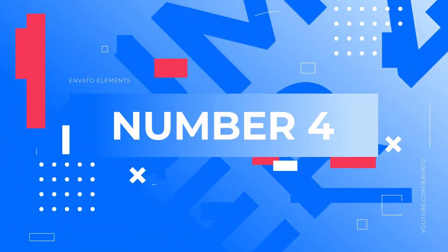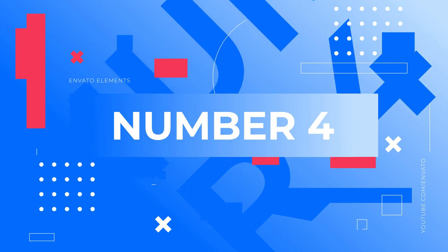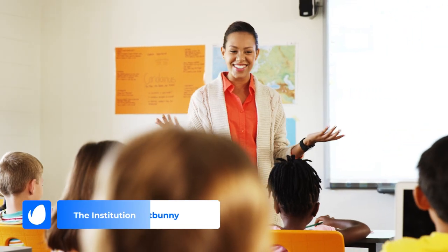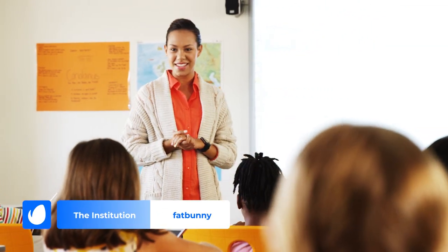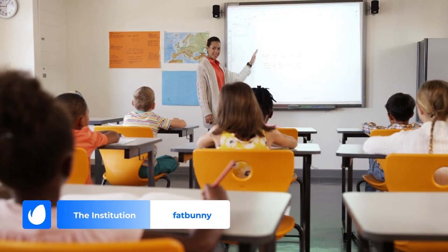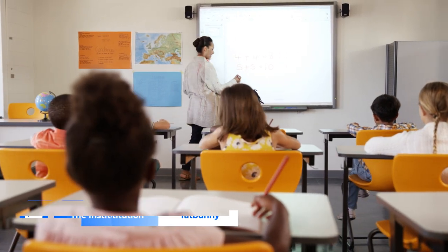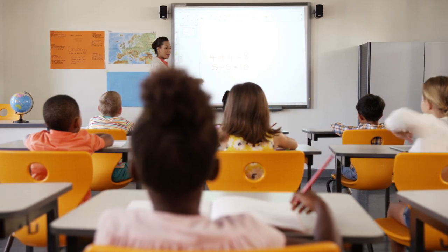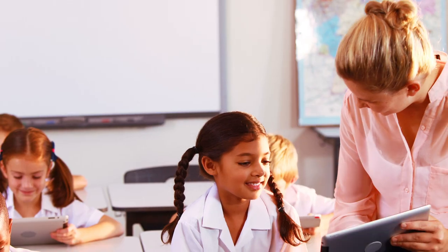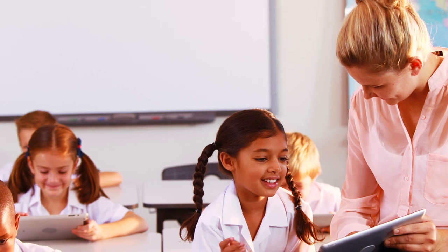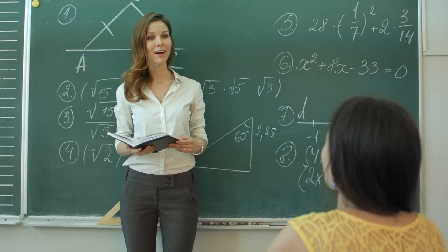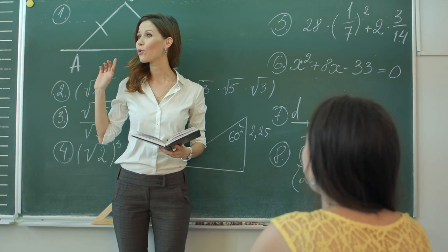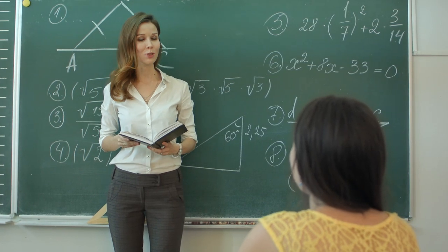Number 4: Institution by Fat Bunny. Phasing in and out of dynamic electronic tones, this track has a calm, modern, and uplifting sound. Through elements like snaps, light drums, strings, and piano, the artist creates a feeling of forward momentum, making it perfect for instructional videos that need an extra push.